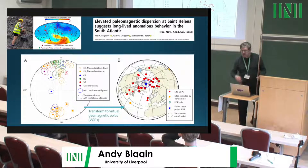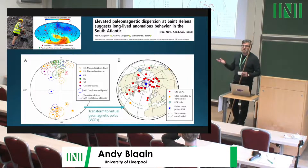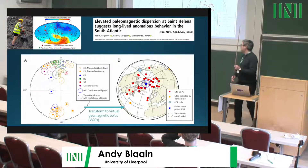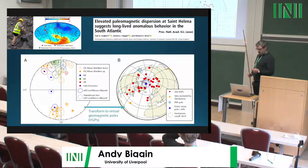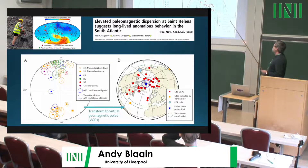The field was up and running and seems to have been running for most of Earth's history. Now we can ask about its stability and shape, using the tool of VGP dispersion — virtual geomagnetic poles.